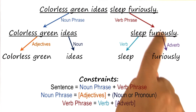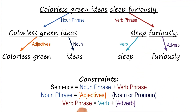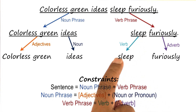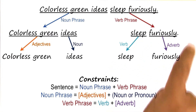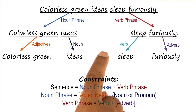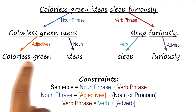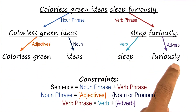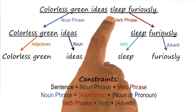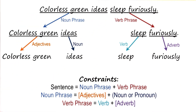Similarly for the verb phrase — a verb phrase can be composed of a verb followed by one or more optional adverbs. We can look at a lexicon and find that 'sleep' is a verb and 'furiously' is an adverb. So we have satisfied the constraints for this particular part. Because we have satisfied the constraints, we know the top-level demarcation of this as a noun phrase and this as a verb phrase was correct.